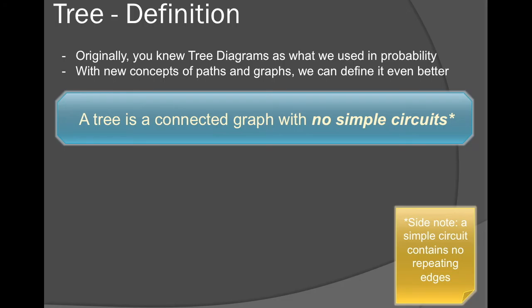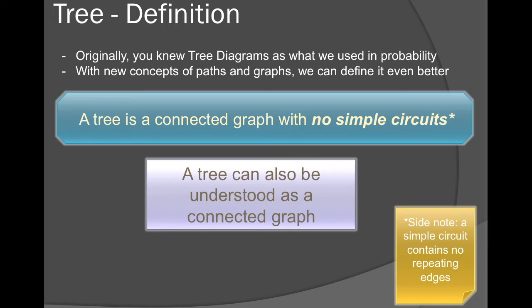A simple circuit just hits every edge just one time. A tree can also be understood as a type of connected graph.